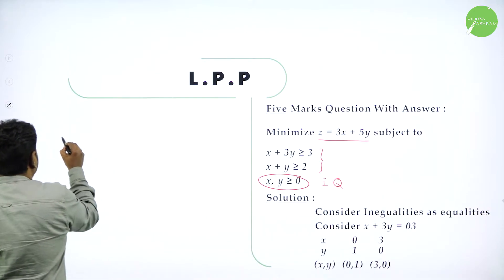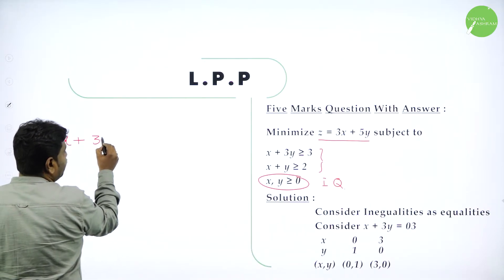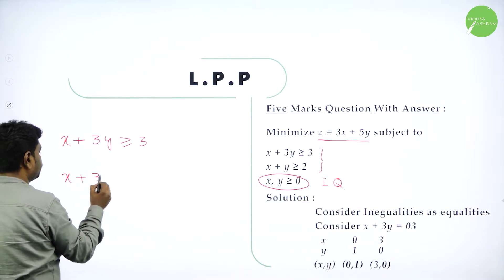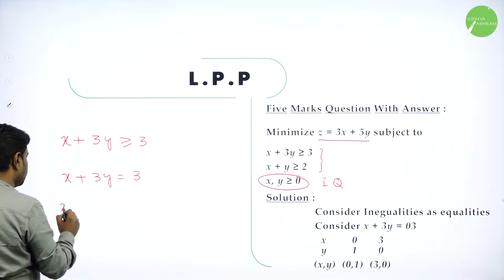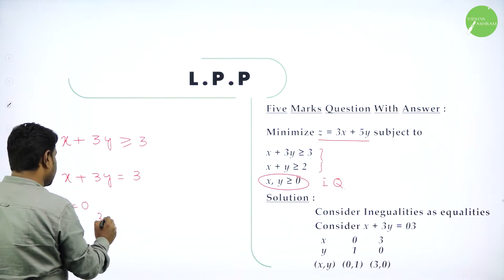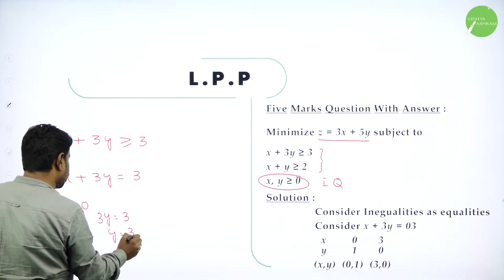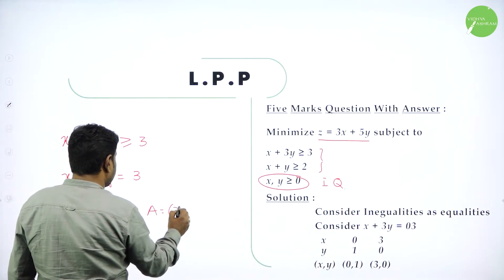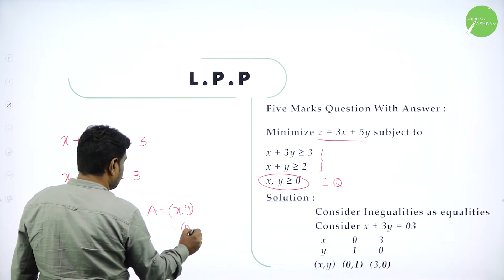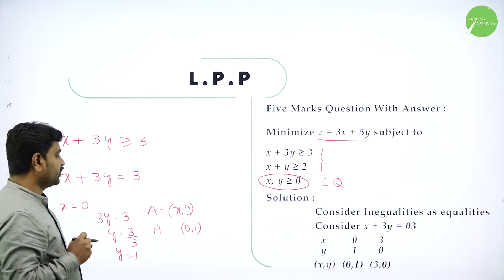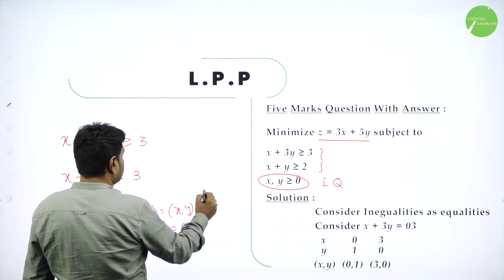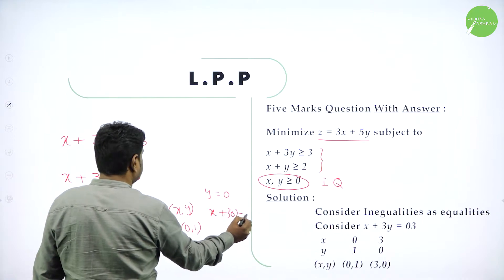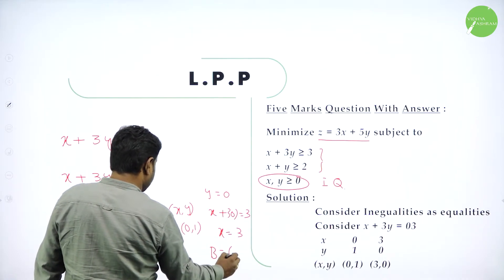What is the first constraint? X plus 3Y greater than or equal to 3. So we will take X plus 3Y equal to 3. Now in place of X put 0, then 3Y equals 3, so Y equals 1. You got one point. To draw a line, minimum you need two points. Next put Y equal to 0 in the same line: X plus 3 into 0 equals 3, so X equals 3. Now you got point B, which is 3 comma 0.